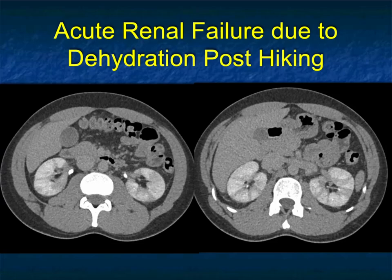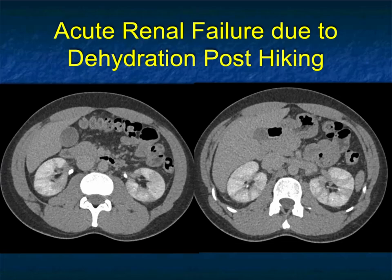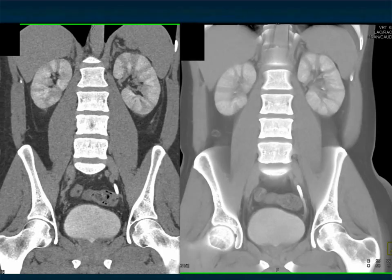Here's an interesting case — this patient was found down after hiking without enough water, became lost and disoriented. You can see areas of decreased attenuation in the kidneys with lack of good cortical medullary differentiation. This is acute renal failure due to dehydration. It's uncommon, but as we think about climate change and hiking incidents, this is how patients may present — with decreased attenuation and striated nephrogram due to acute renal failure, shown nicely on coronal views.